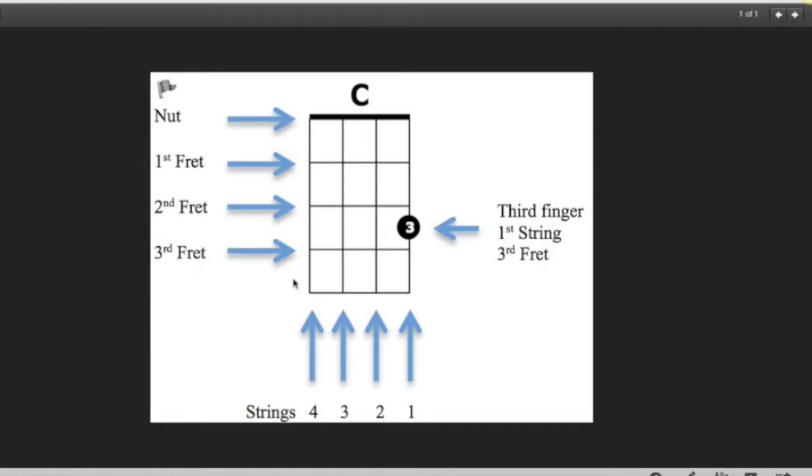But all we really need when we're looking at a chord chart is the first three or four frets. As you're facing your ukulele, string four is on the left, string three is next to it, and then two, and then one. Here is the first fret, second fret, third fret.